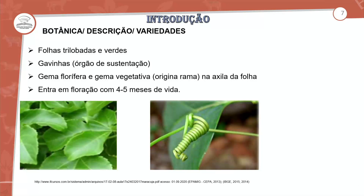As folhas são trilobadas e verdes. As gavinhas são órgãos de sustentação para que a planta consiga se aderir e se fixar. Gemas florais e gemas vegetativas surgem das partes axiais da folha.